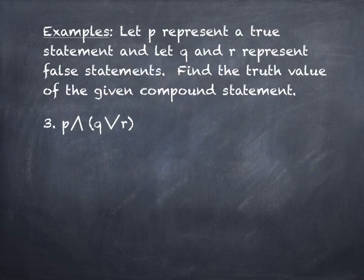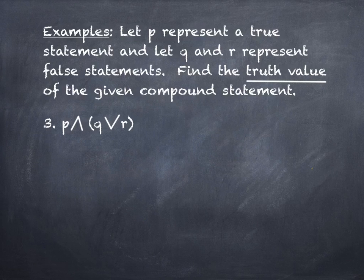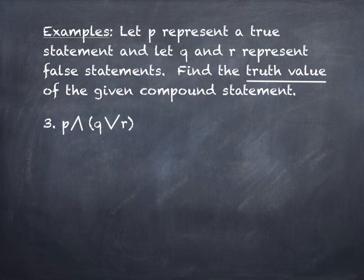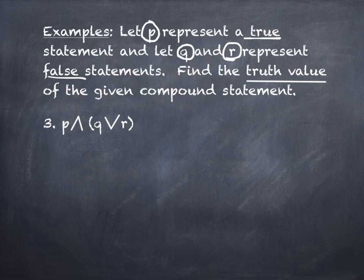Let's take a look at this example. P represents a true statement; Q and R are false statements. Find the truth value of the given compound statement. What do you notice first that's different? There are three statements — P, Q, and R. And all three values are given: P is true, Q and R are false.